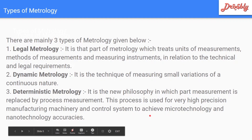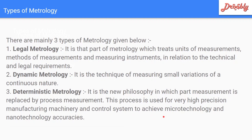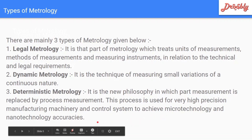Deterministic metrology is used in very high-precision manufacturing with control systems for micro-technology and nanotechnology accuracy. Micro-technology means accuracy to 10 to the power of minus 6, and nanotechnology means accuracy to 10 to the power of minus 9. Control systems are used to achieve this.